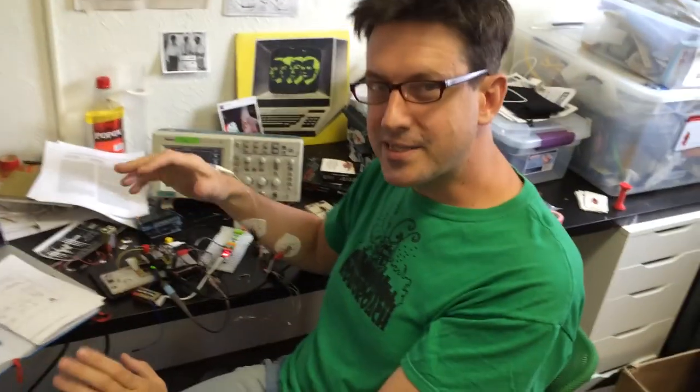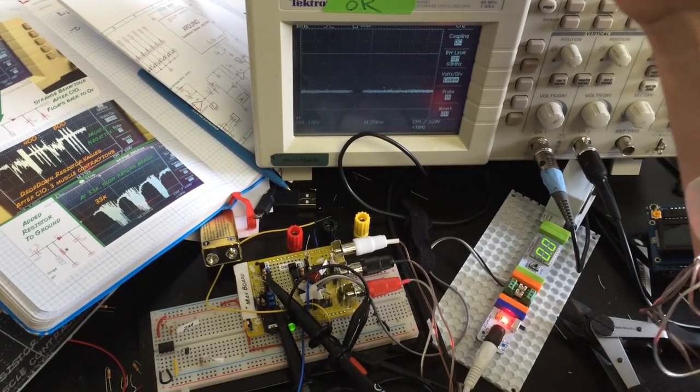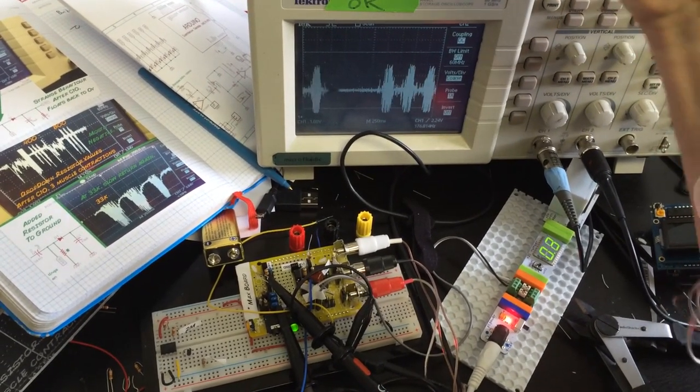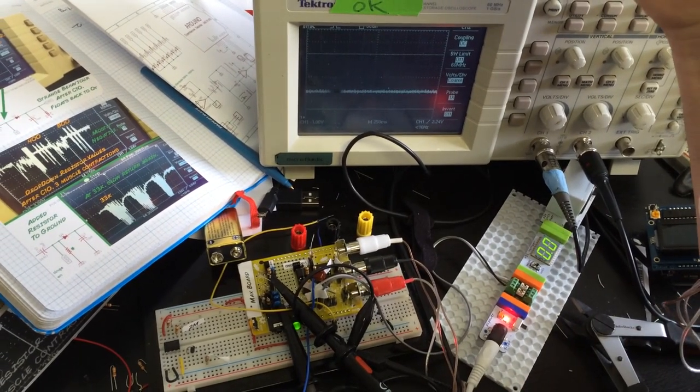You can also use EMG to control robotics projects. I'll show you. The first signal is really good for listening to the motor action potentials. But the problem is the motor action potentials are so quick that it doesn't allow it to control other bits very well.